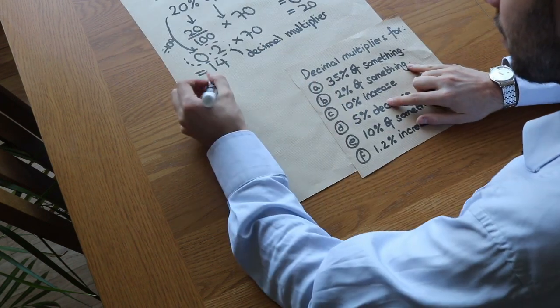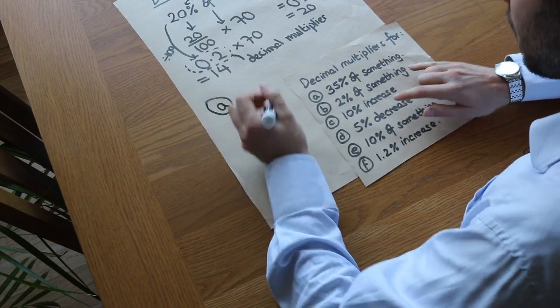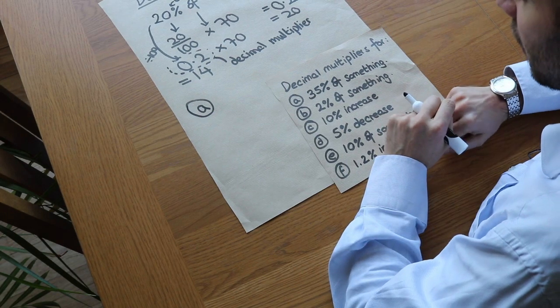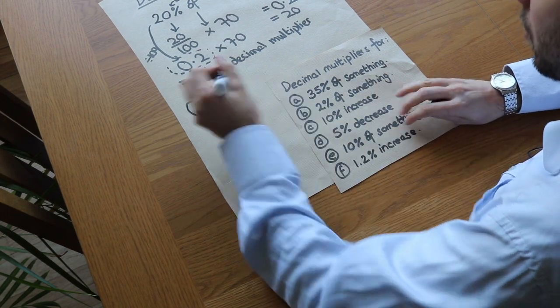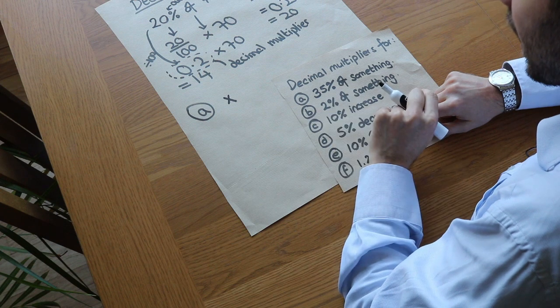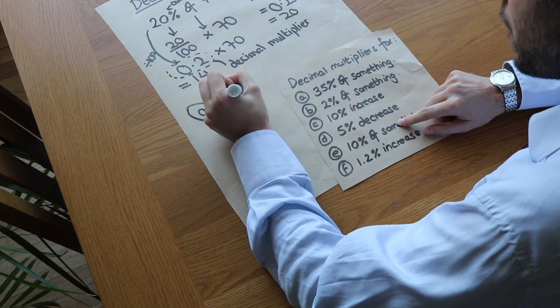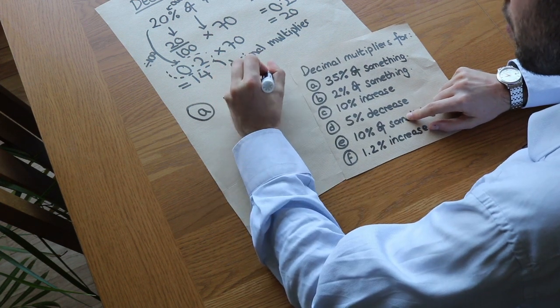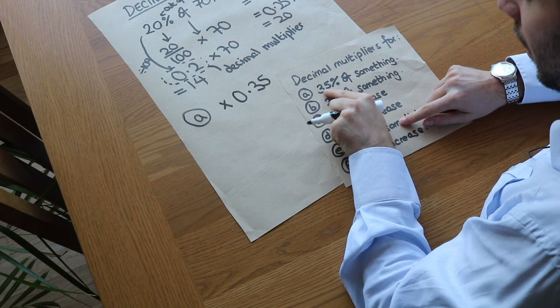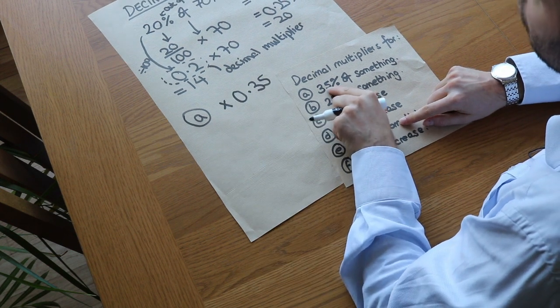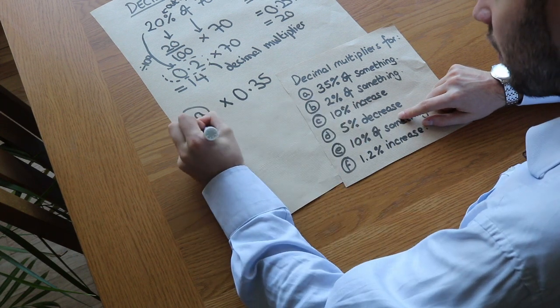Let's use that for a variety of percentage scenarios. If you want to find 35% of something, what would you multiply by? You'd multiply by that percentage as a decimal, which would be 0.35. Remember, we just divide by 100, so 35 over 100 is 0.35.